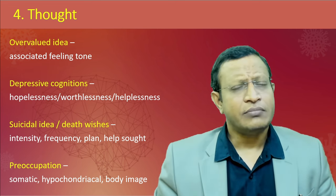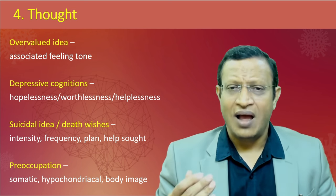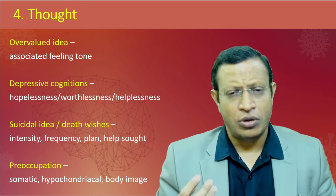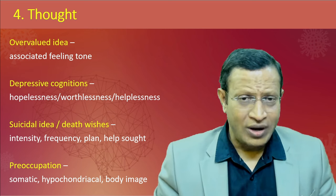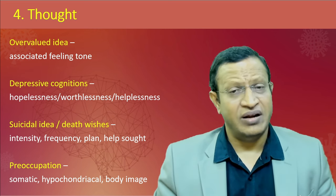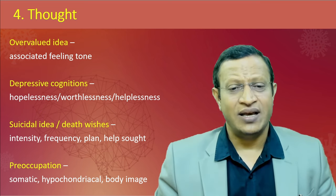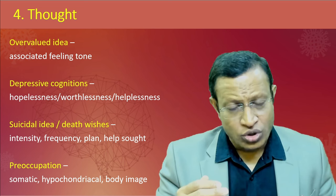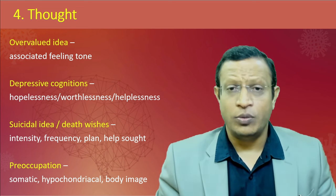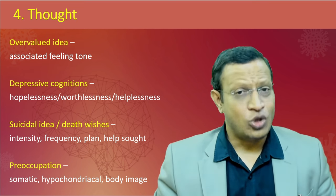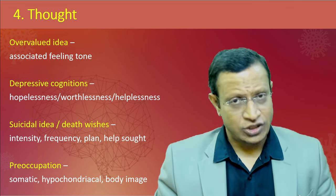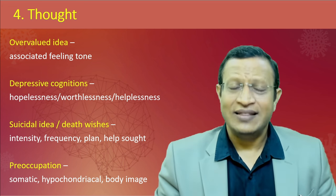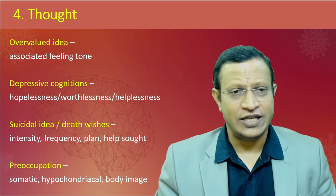Coming to depressive cognitions - if the patient gives an idea of hopelessness, worthlessness, and helplessness, saying there is no hope for the future and he has become dependent on family members and nobody can help, we call this depressive cognition. Assess suicidal ideas and death wishes: how much intensity, how frequently, whether he has planned to attempt suicide, how he plans to do it, whether he wants help. Also capture preoccupations about somatization, somatic aches and pains, hypochondriacal delusions or hypochondriasis (fear of having an illness), and body image disturbance under thought content.